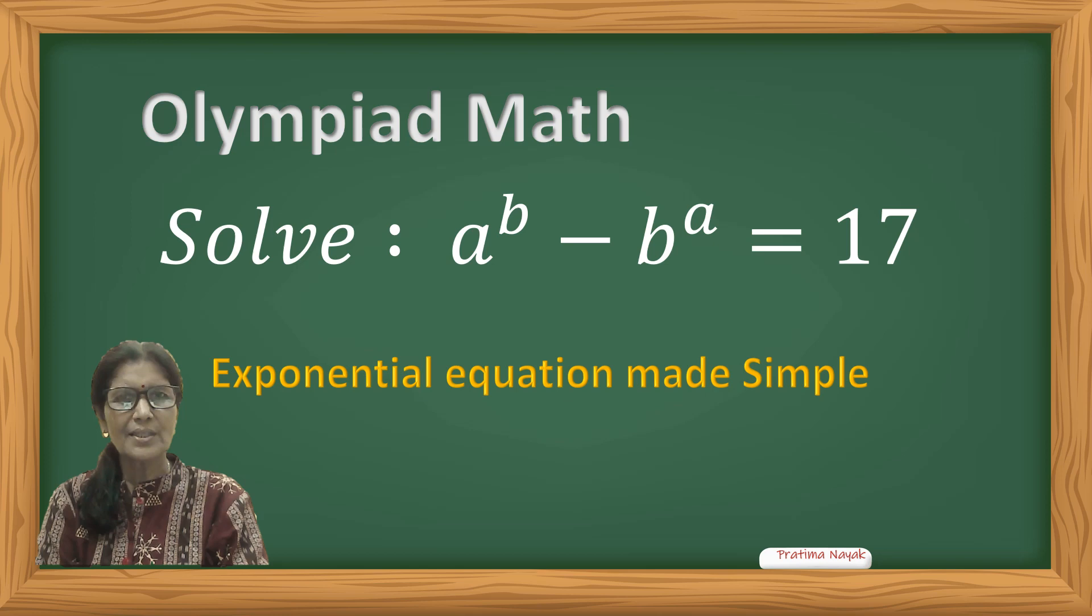Hello friends, I am Prutima. I welcome you all to my channel. Today I'd like to share another Olympiad math question. It is an exponential equation. To solve it: a raised to b minus b raised to the power a equals 17.